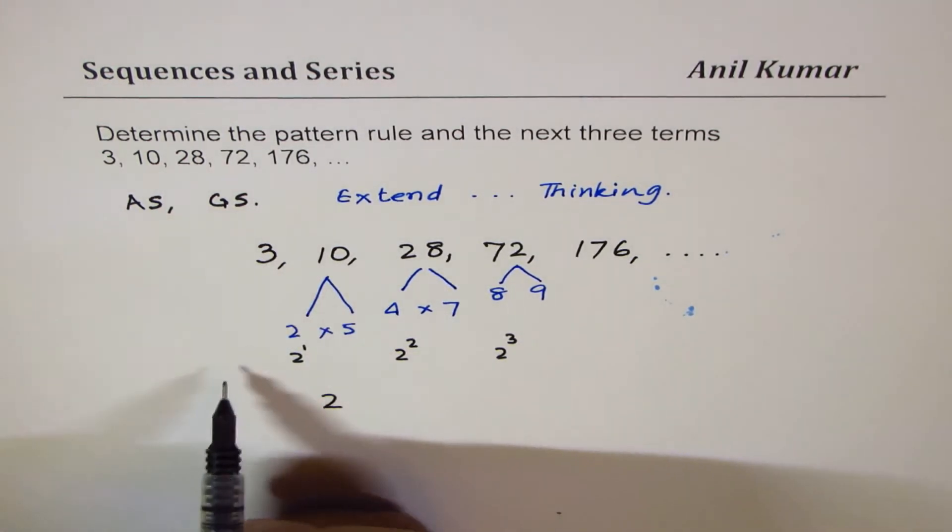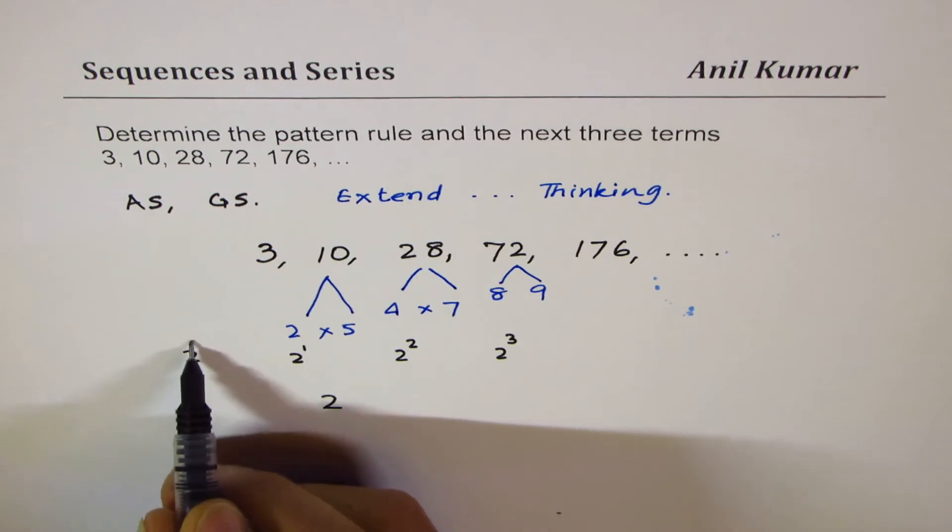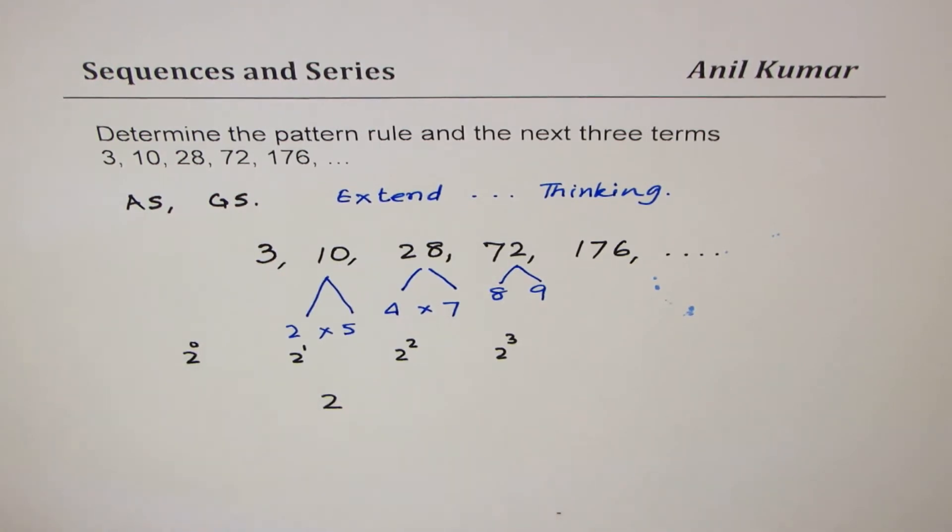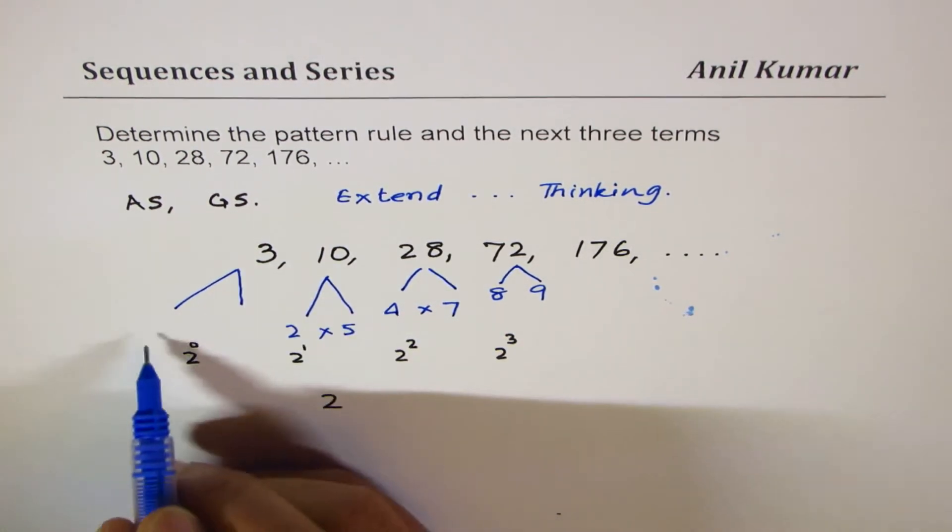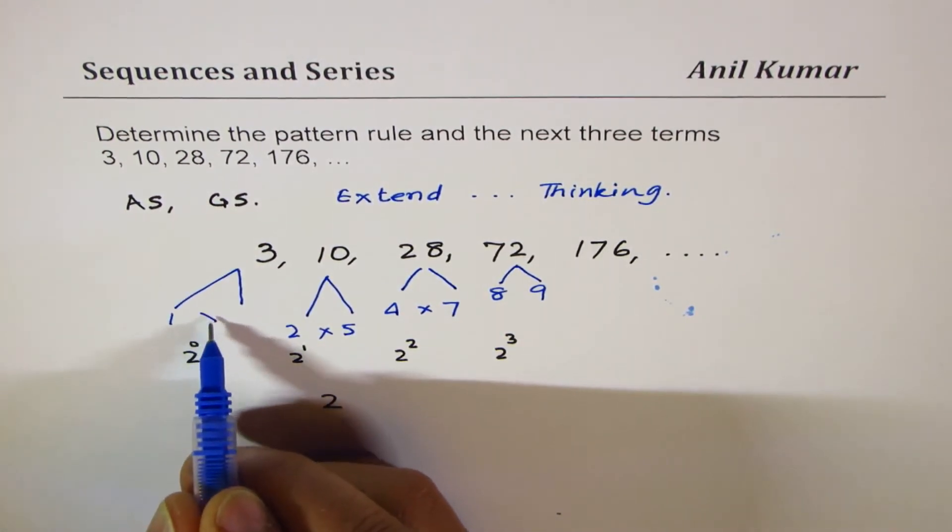Now, looking into this pattern, 3 could be multiple of 2 to the power of 0, which is 1. So it makes sense. So I could split 3 into 1 times 3.